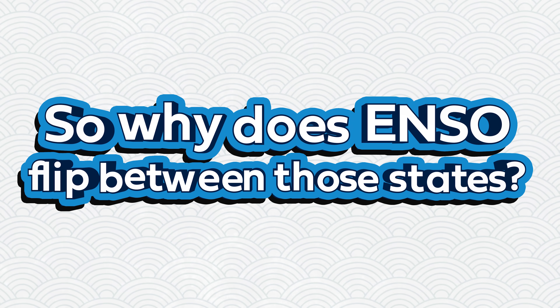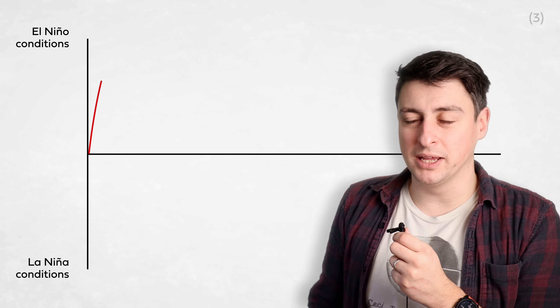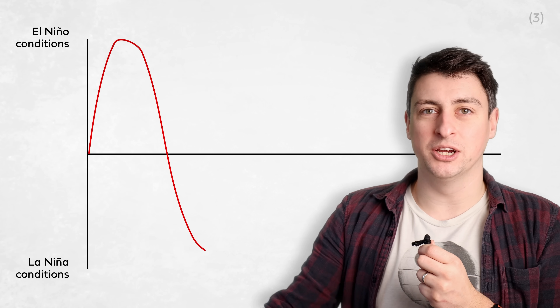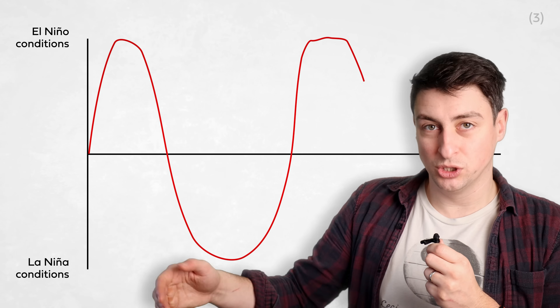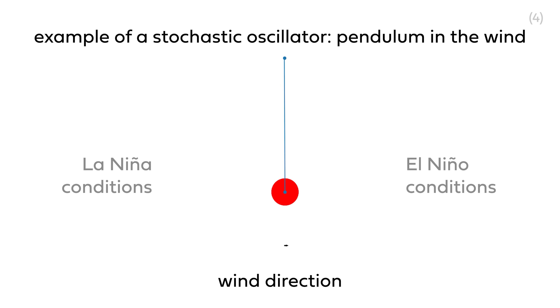So why does ENSO flip between those states? It's important to understand that it's not as simple as the atmosphere forces the ocean, or the ocean forces the atmosphere. We cannot say whether a change in one of those two parts of the system will cause the whole system to flip states. The atmosphere and the ocean are tightly coupled, and we don't exactly know why they flip between those two states. Some people will say that the system is just inherently unstable, like it's an unstable oscillator that bounces between El Niño and La Niña, with some returning force that restores it to a neutral state. Other theory is that the system is relatively neutral, but it's being kicked around all the time with noise — so it's kind of like a stochastic oscillator. And we still don't know which one it is.